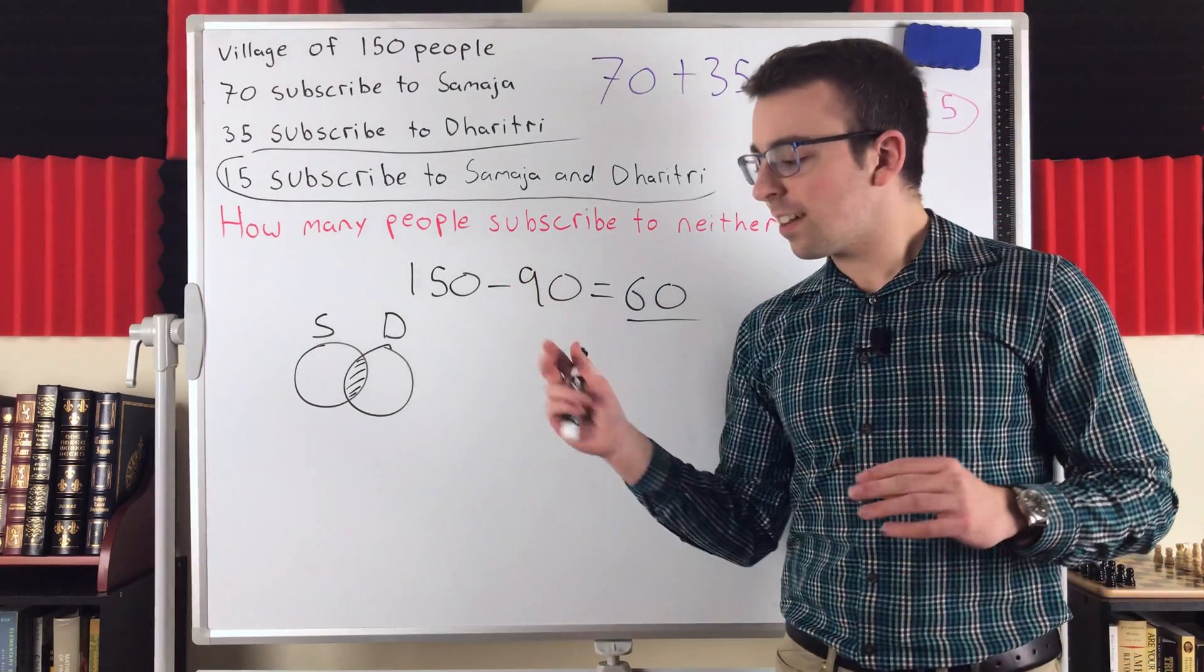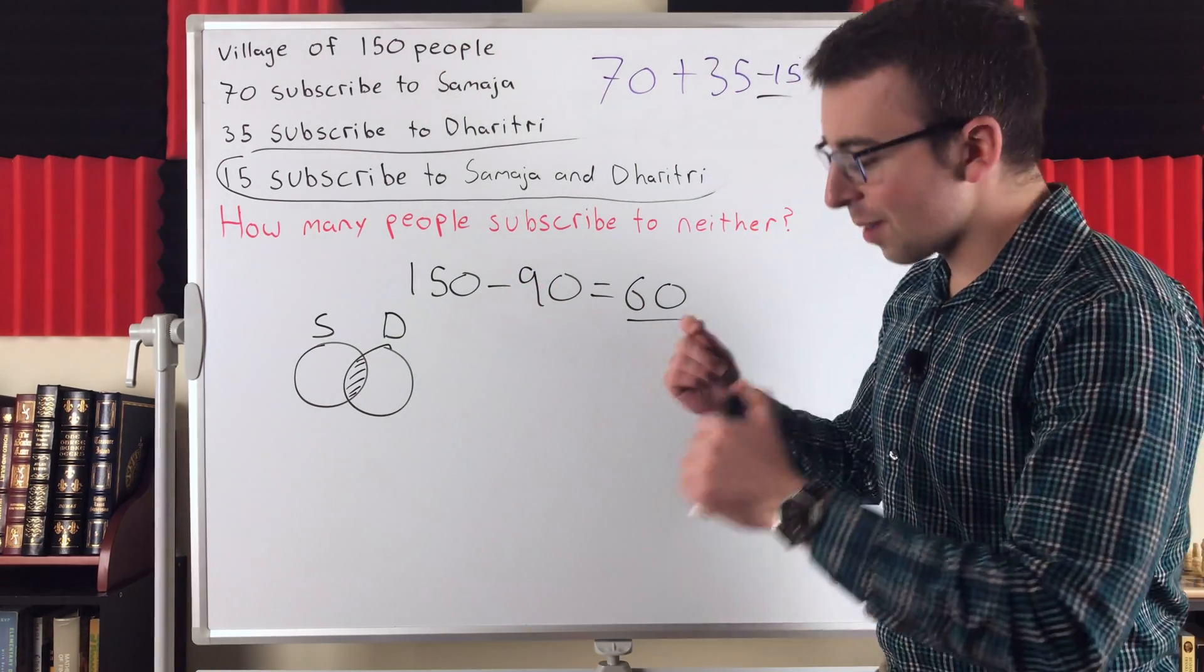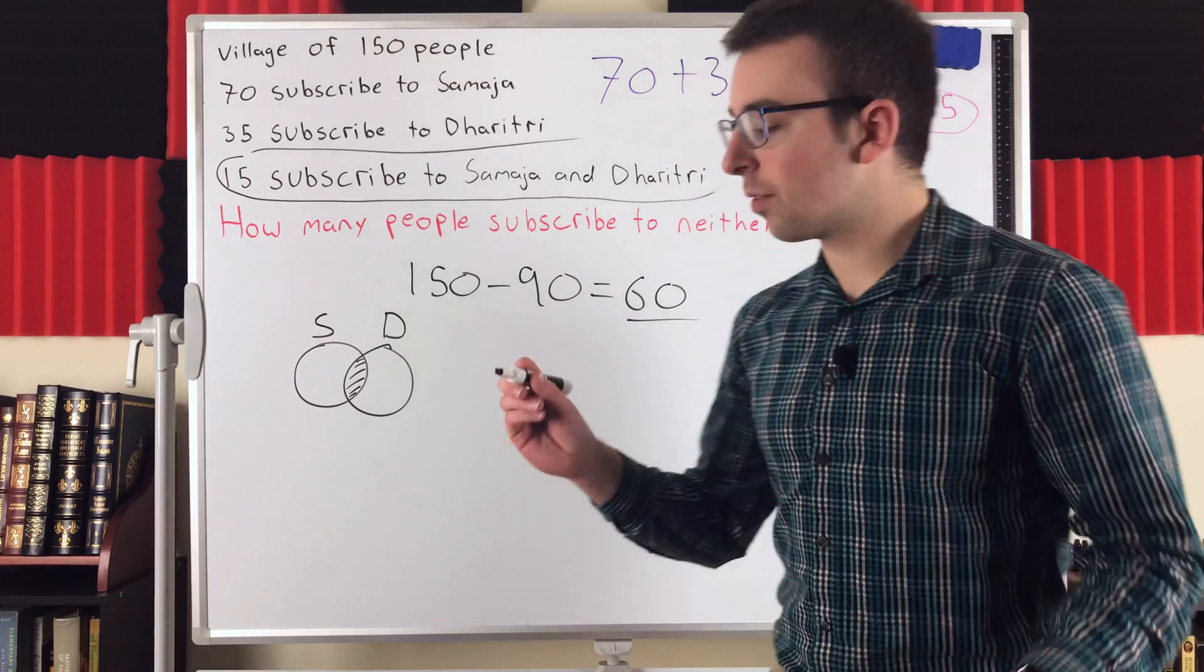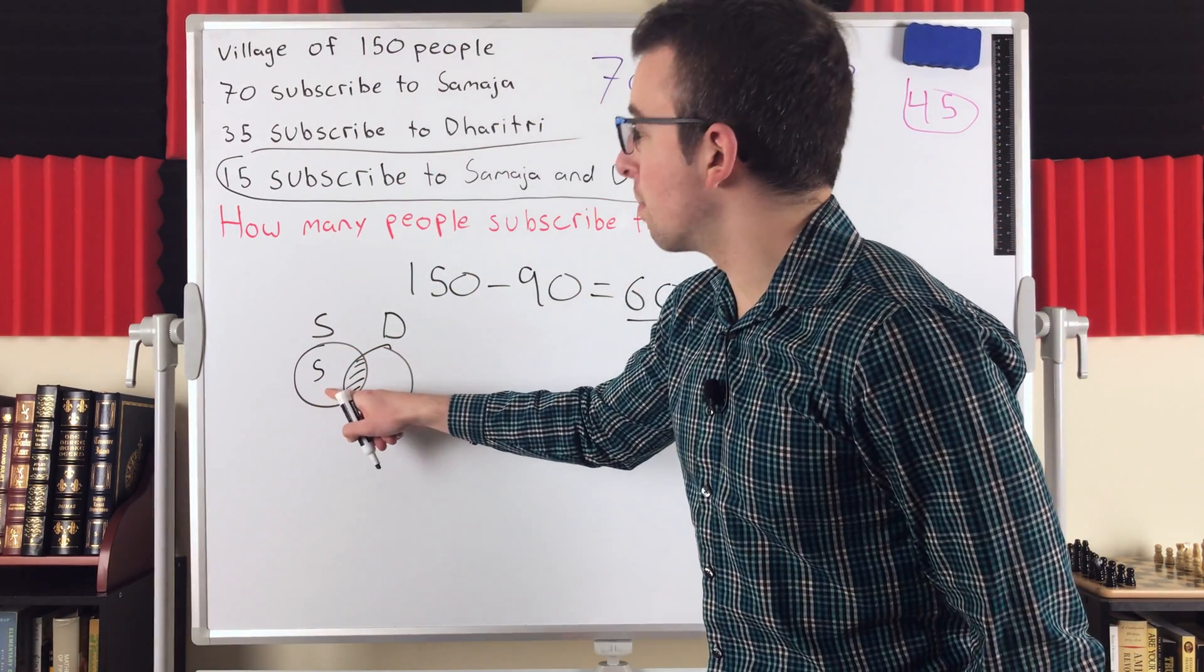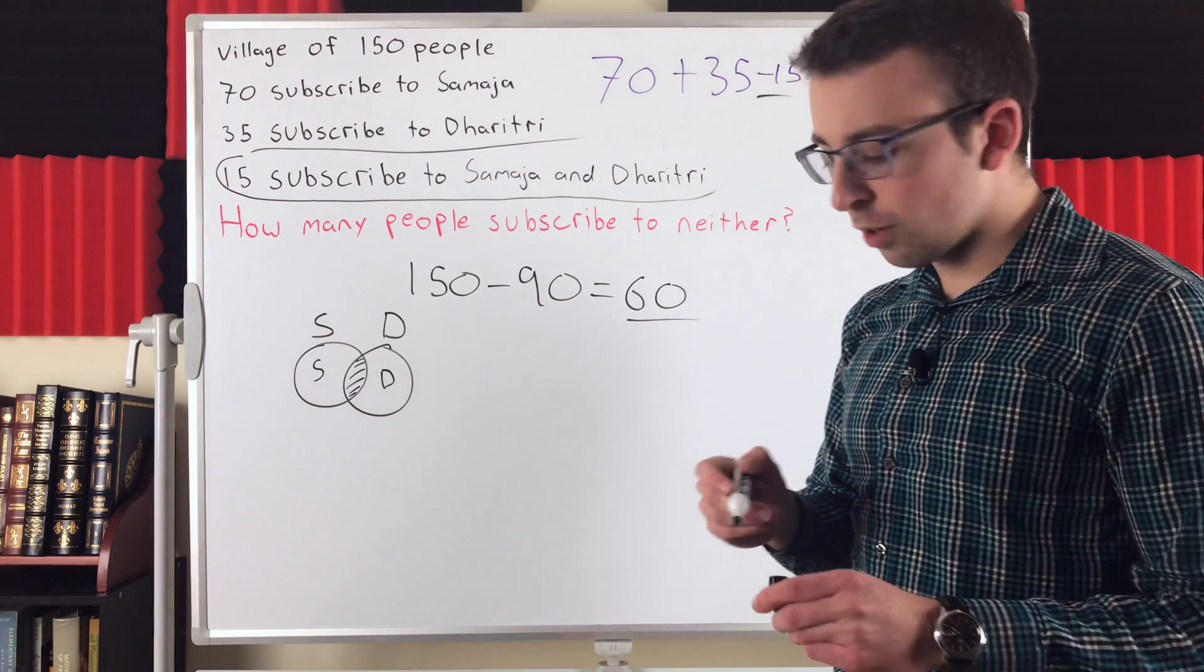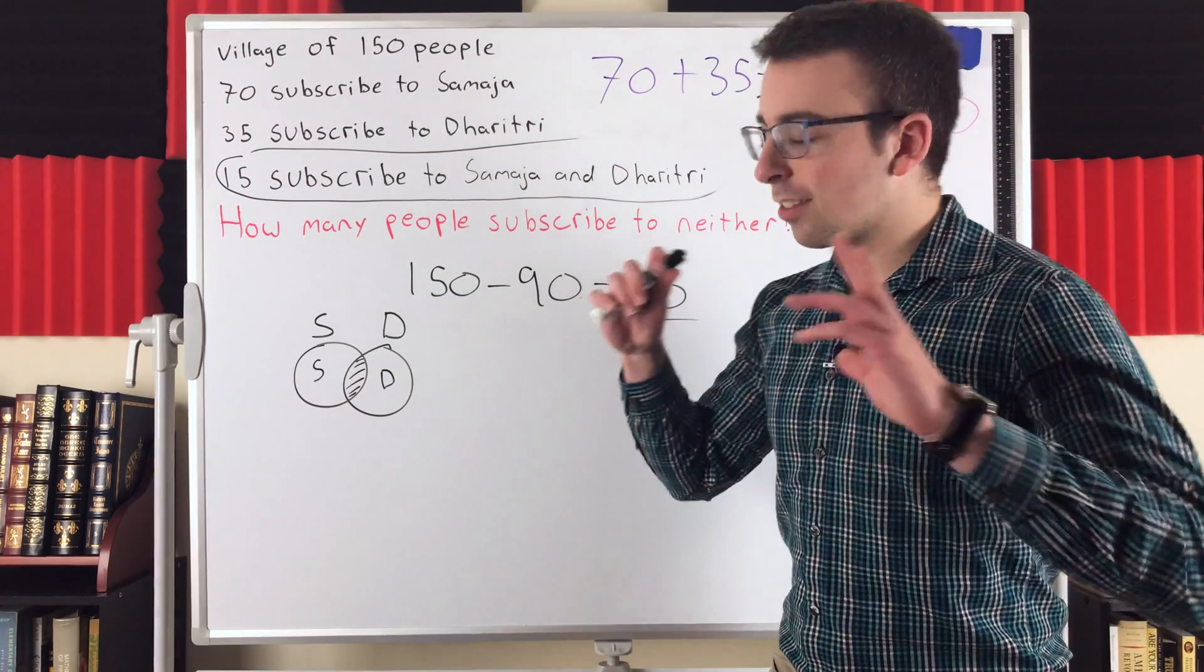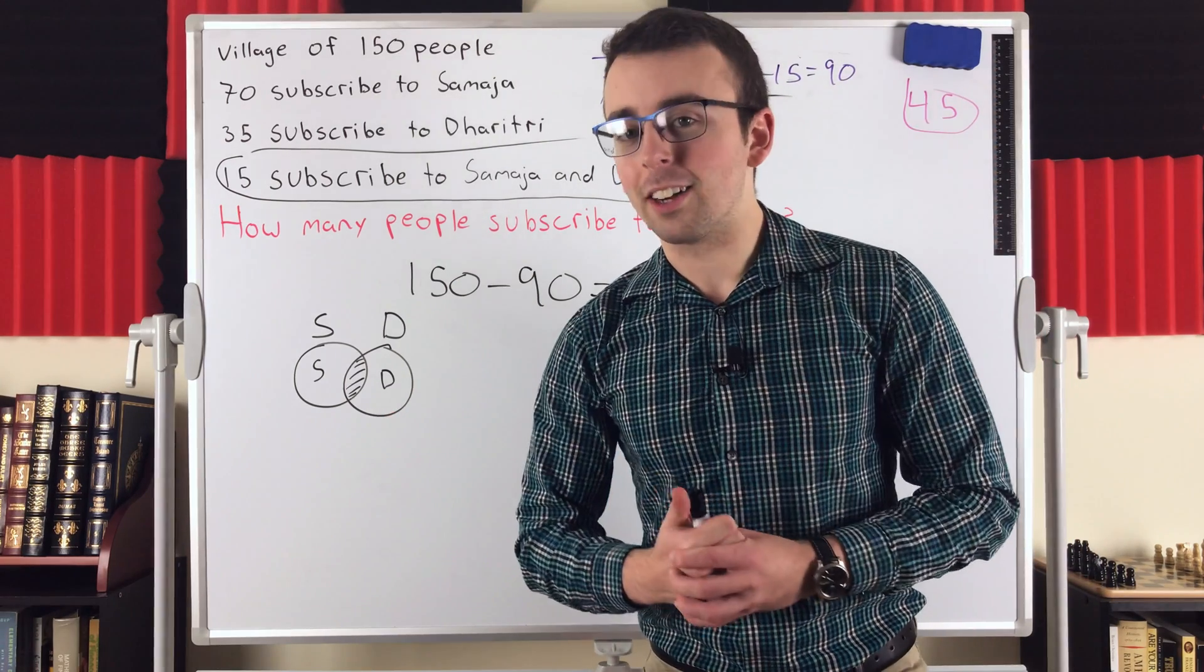But with counting problems like this, if you're ever having trouble solving it, sometimes it's best to just sort of hunker down and use some algebra. You know, make some symbols to represent the different groups that you're trying to find. Like, you might let S be the number of people who are subscribed only to the Sumaja. And D be the number of people who are subscribed only to Dhritri. And then set up some equations based on the information you have. That's a slower approach. It's kind of overcomplicated, but sometimes that's really all you can come up with.